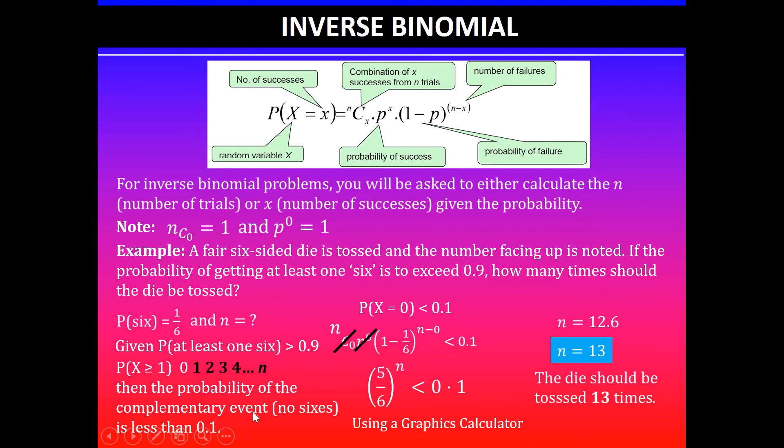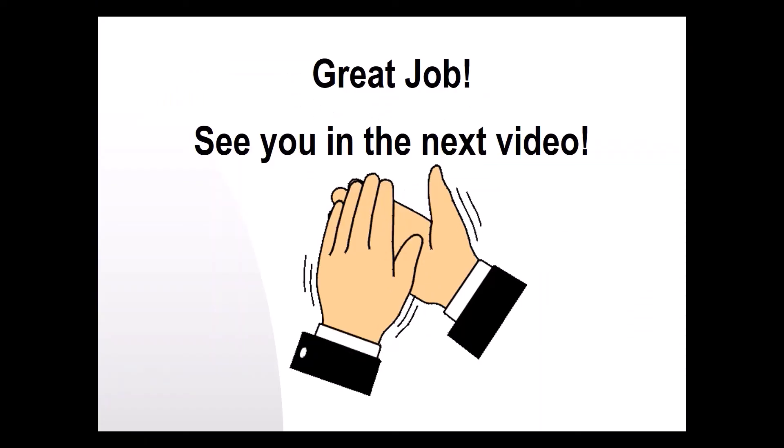So using complementary events we can find the probability of getting 0 successes. And once I find that x value is 0 and the probability, I can substitute in the binomial distribution formula and solve for the n value. Thanks for watching. I will see you guys in the next video.